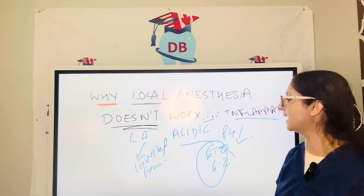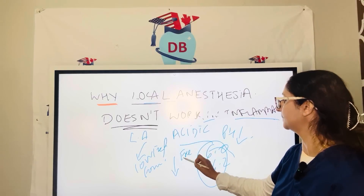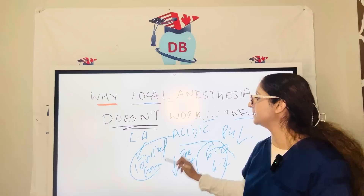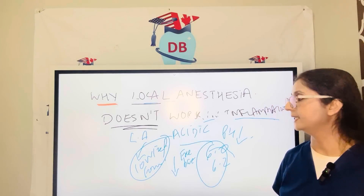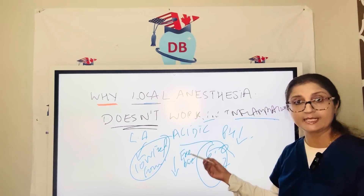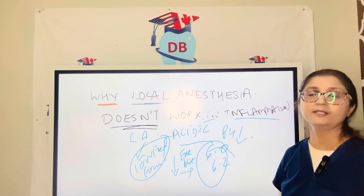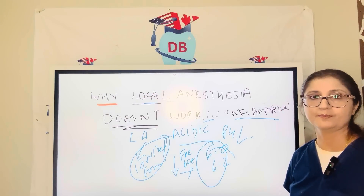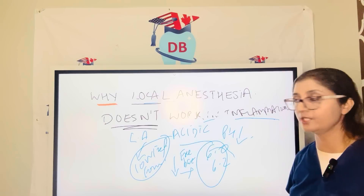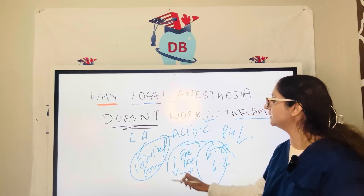There is very little freebase form available. The ionized form is lipid insoluble and cannot penetrate the nerve cell membrane. The decreased freebase form is present in such a small quantity that it also cannot penetrate the nerve cell membrane, and that's the reason anesthesia is not achieved in inflammation or acidic conditions.